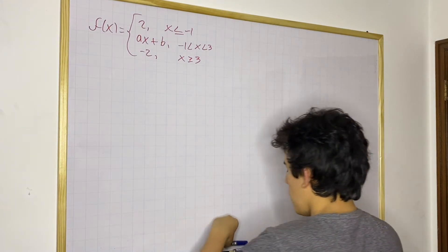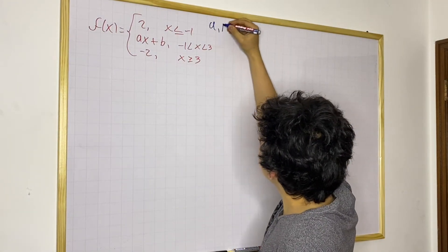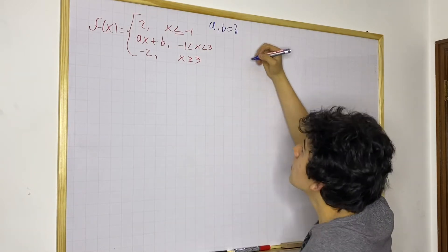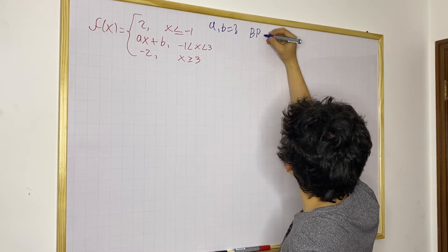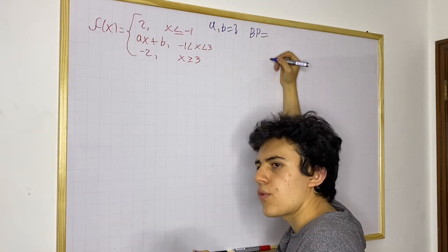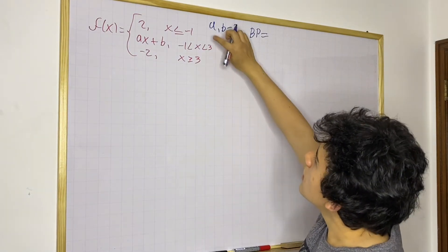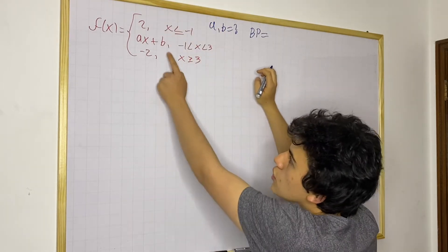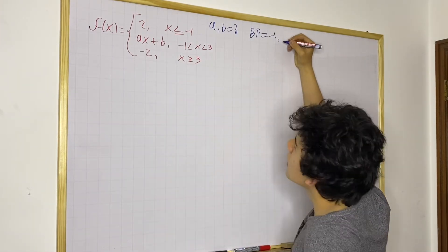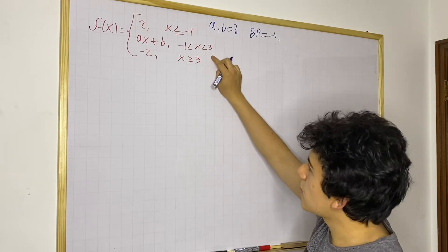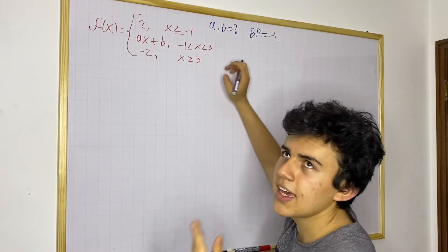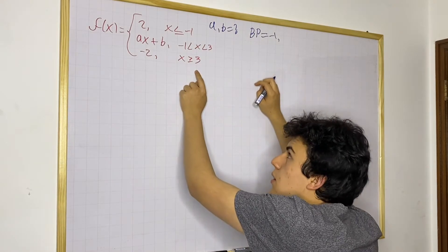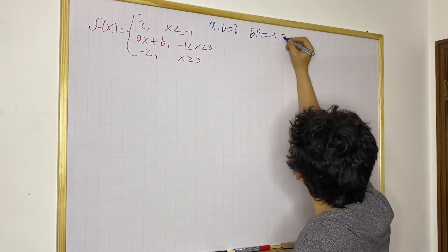So what do we need to find? We need to find a and b. We also need to identify our breaking points — those are the points where we switch to a different piece because we've reached a different x value. In this case, minus 1 is a breaking point because when we get to minus 1 we switch from 2 to the linear function. And 3 is also a breaking point because when x is equal to 3 or greater, we follow the constant function y equals minus 2.